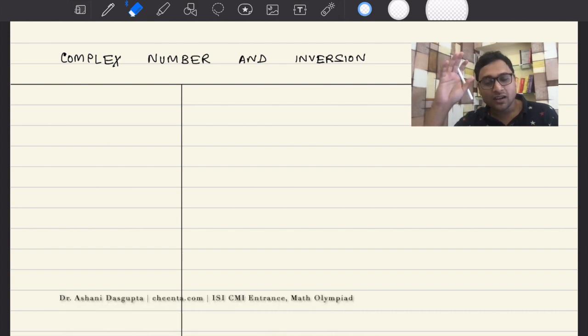Today we will be learning about a very deep relation between geometry and algebra. On one hand we have complex numbers from algebra and on the other hand we have inversive geometry. If you have not seen inversive geometry before, do not worry. We will discuss a little bit in this video.